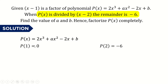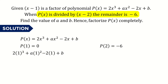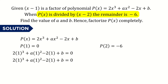Using these two conditions, we can find the values of a and b. Starting with p(1) = 0: we substitute x = 1 into the polynomial, and the result must equal 0. Simplifying: 2 times 1³ gives 2, and 1² gives 1, so we get a.